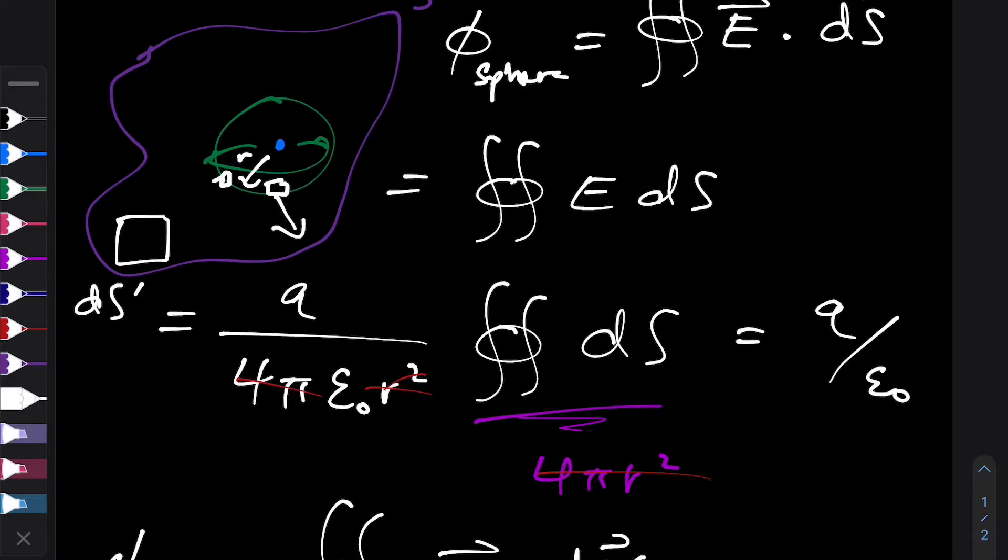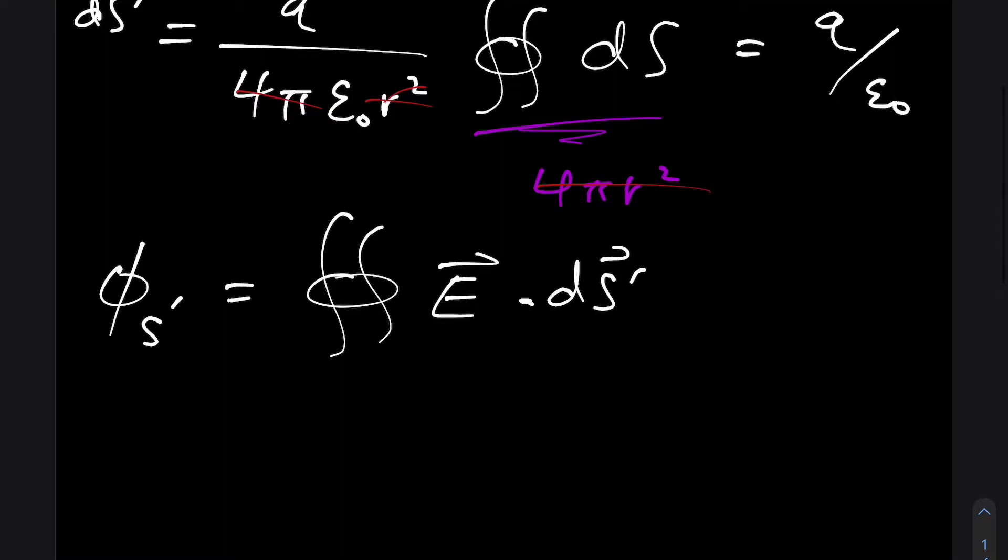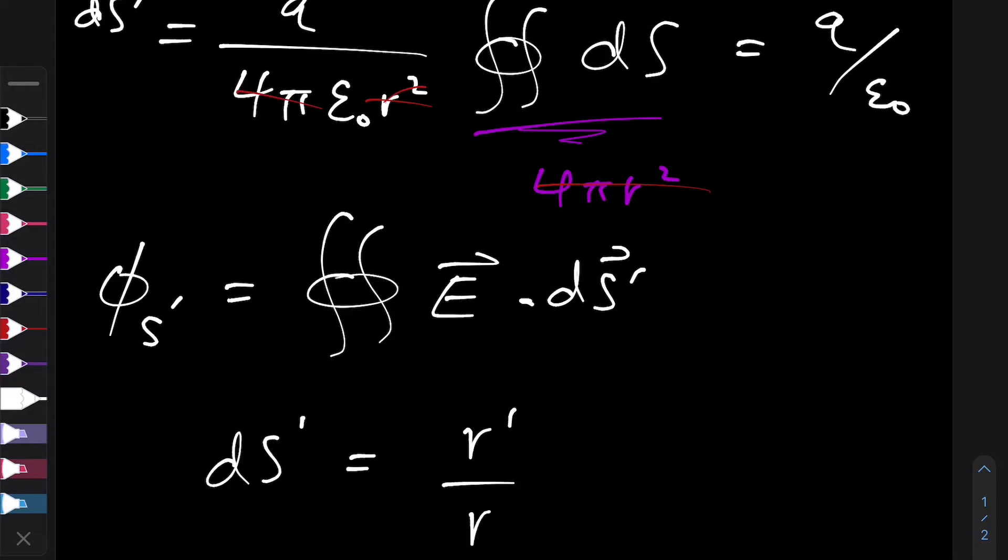is we know that every ds can be projected onto ds dash. So say we had a ds here, and that's projected onto ds dash. And if ds is r away, ds dash is r dash away. And that just tells us we can use the inverse square law to relate ds to ds dash. In particular, we know that ds dash is equal to r dash over r, because it's an inverse law, inverse square law, we have to square it, times ds, which makes sense because ds dash is a scaled up bigger version of ds.